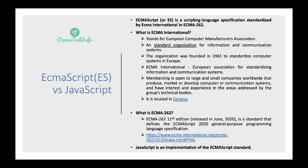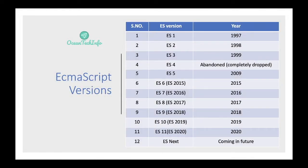Now let's discuss the ECMAScript version history. ES1 was released in 1997, ES2 in 1998, ES3 in 1999, ES4 was completely dropped and never released. ES5 was released in 2009, ES6 in 2015, ES7 in 2016, ES8 in 2017, ES9 in 2018, ES10 in 2019, and ES11 in 2020. ESNext refers to future features that may come up in the future.